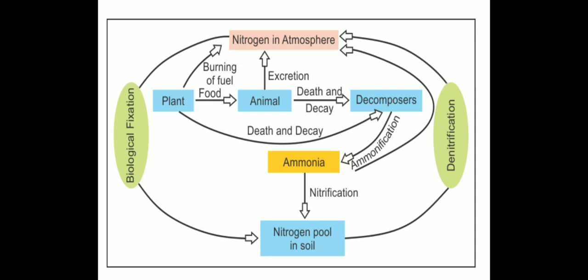Inside the inner cycle, plants are eaten by animals, and when the animals die they are decomposed by decomposers. This death and decay causes ammonification, and because decomposition happens within the soil, it adds to the nitrogen pool in the soil, bringing a large amount of nitrogen into it.